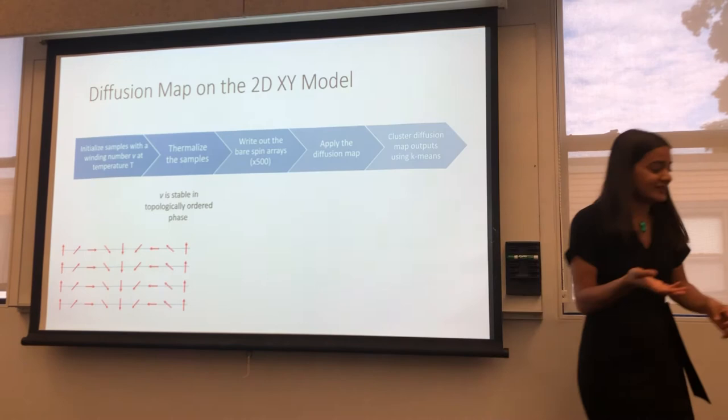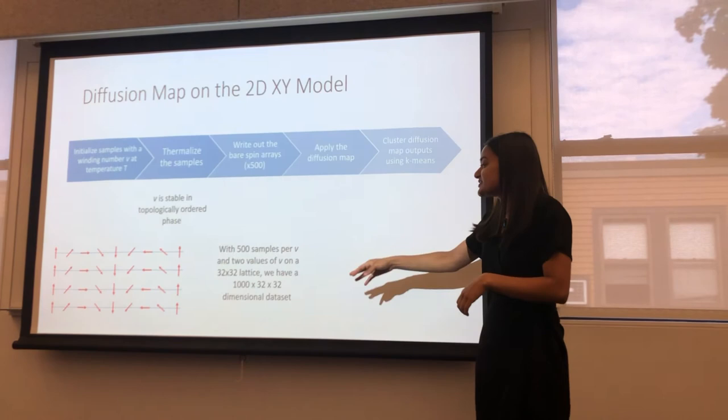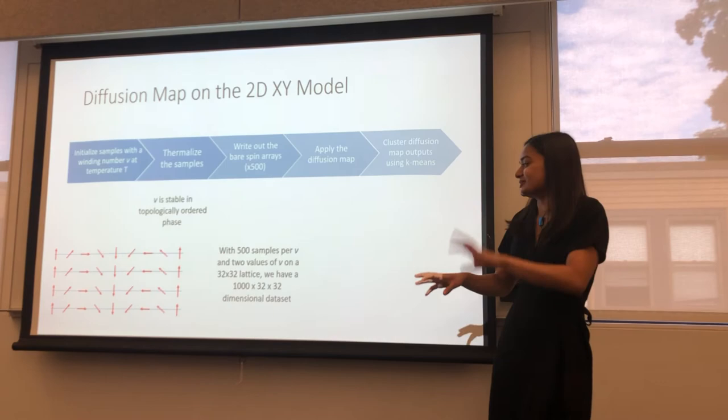Okay, so the next step is to thermalize the samples using the process I described earlier. And so we should find that the winding number is stable in the topologically ordered phase and unstable in the topologically disordered phase. Okay, so next we write out the bare spin arrays. So that is, we literally will write out to like a text file the angle of all of the vectors and all of our samples. And we do this a bunch of times. So now we have, in our case, we did it on a 32 by 32 lattice. So we have a, you know, n times 32 by 32 dimensional dataset.